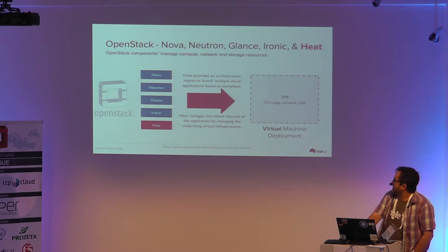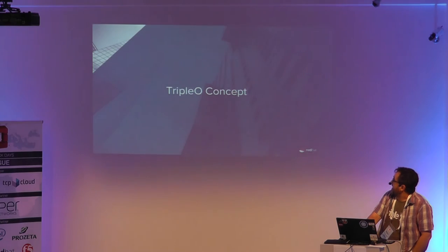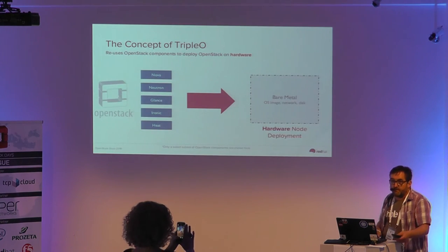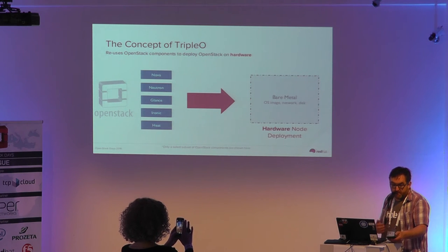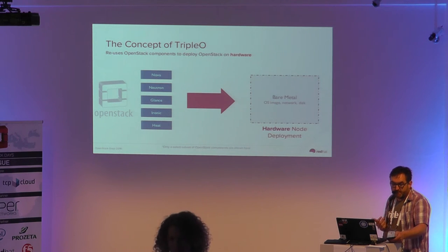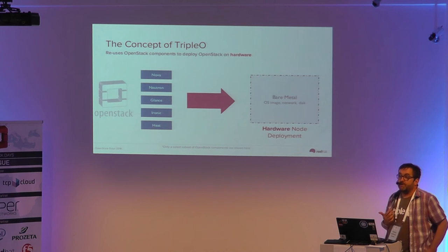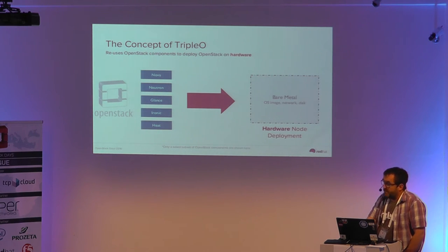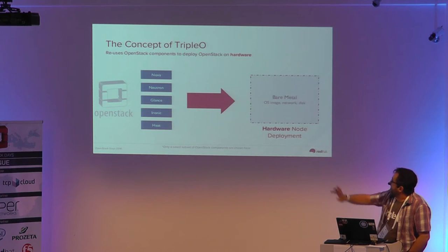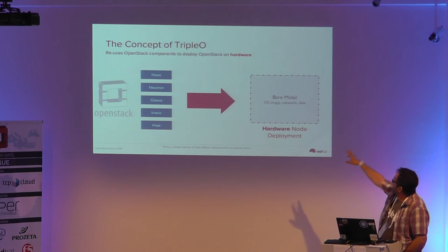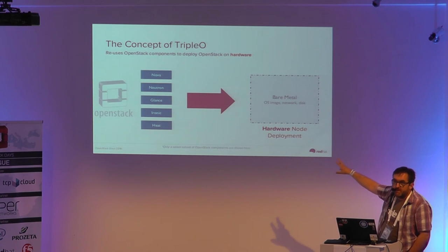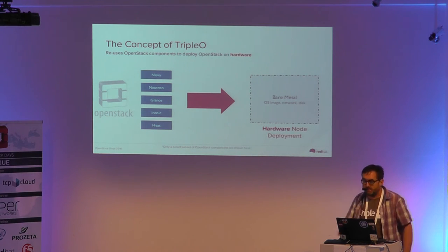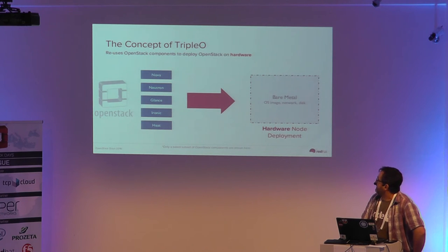What TripleO does — the OpenStack on OpenStack part — is use those same components but as the infrastructure and tooling for deploying and managing OpenStack itself. To be more specific, we've got the same set of services, but in this case they're deployed onto bare metal machines, actual physical infrastructure — the machines that are going to be your production OpenStack instance.